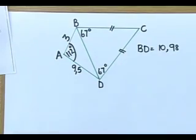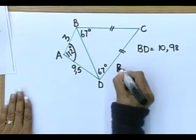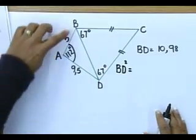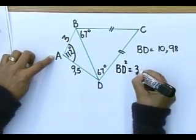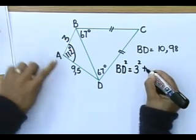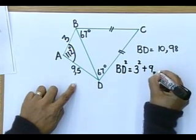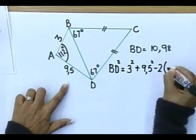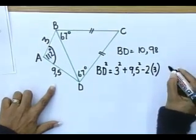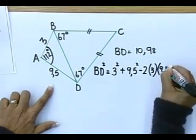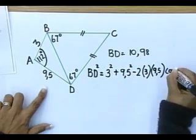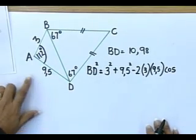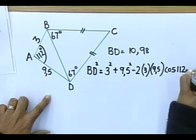So, my cos rule says that your BD is what I'm looking for. BD squared is equal to, you take the one side that you have is 3 squared plus, what is my other side? 9.5 squared minus 2. Open up the bracket times 3. Open up another bracket, 9.5 times the cos. What is my included angle? My included angle is 112 degrees.